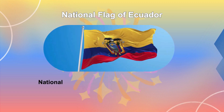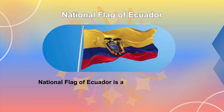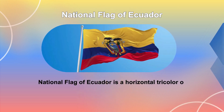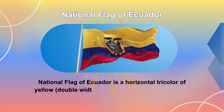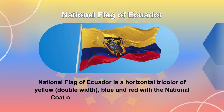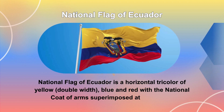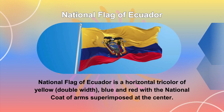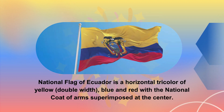The National Flag of Ecuador is a horizontal tricolor of yellow at double width, blue and red, with the National Coat of Arms superimposed at the center.